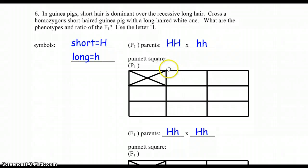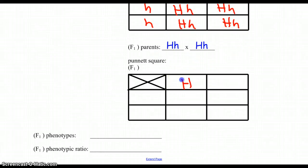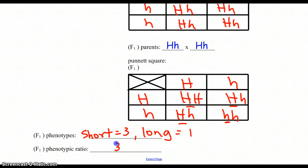Number six — short hair is dominant over long. Our first parent is a homozygous short hair, and the second is a pure long. It wants to know the phenotypes and ratio of the F1. We fill out our Punnett square, and they're all the same, just like the last problem. The phenotypes — I write it out, not using symbols. Looking at the first letter of each, I have three that are short and one that is long. The ratio is 3 to 1.